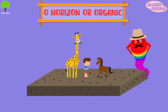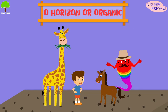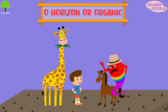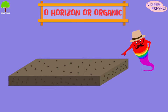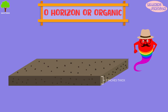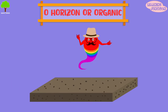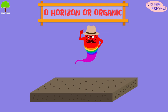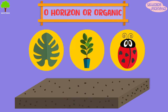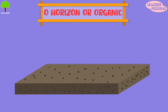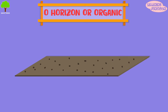O — organic. This is the top layer where we all stand. This is a layer of organic matter and is approximately 2 inches thick. It is made up of living and decomposed materials like leaves, plants, and bugs. Sometimes this layer is very thick or thin, or may be absent.